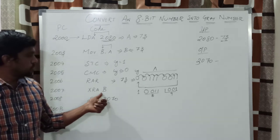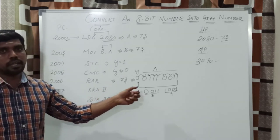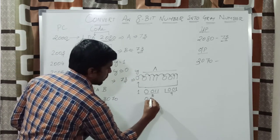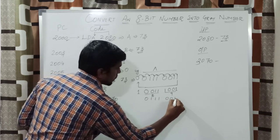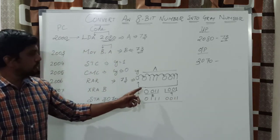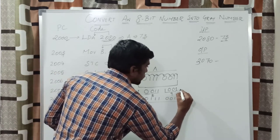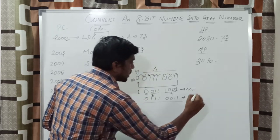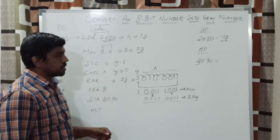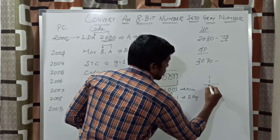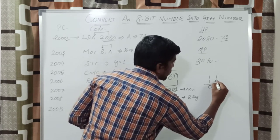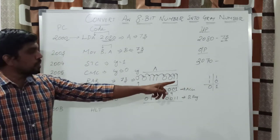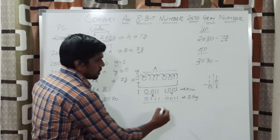The next instruction is XOR B. Whatever value is present in the accumulator, the XOR operation is performed with the B register. The B register content is 73. You apply the XOR operation with the accumulator content (39) and the B register content (73). You know the properties of the XOR gate: if both values are equal, the result is 0; if the values are different, the result is 1.